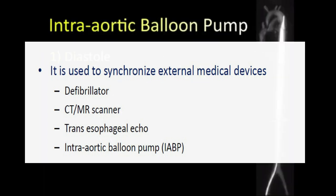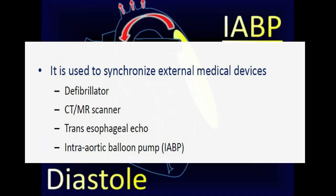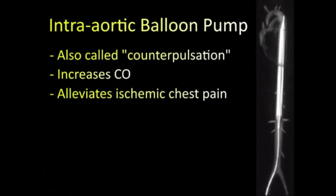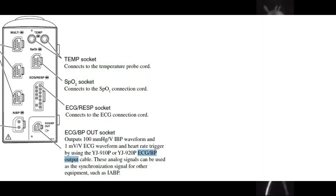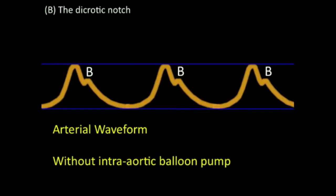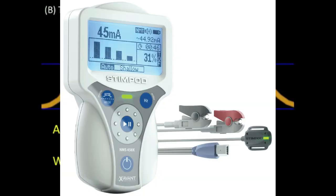The Intra-Aortic Balloon Pump is a type of therapeutic device. It helps your heart pump more blood. You may need it if your heart is unable to pump enough blood for your body.